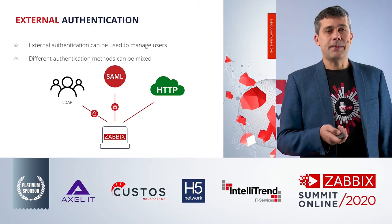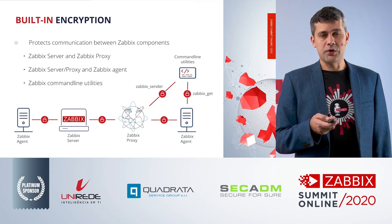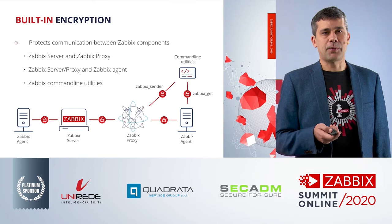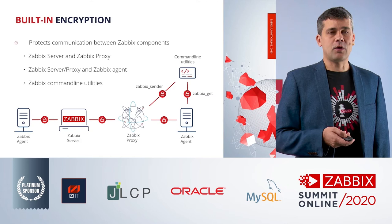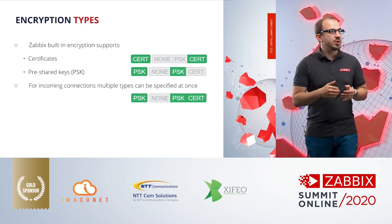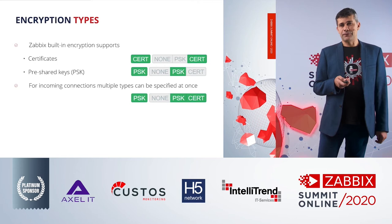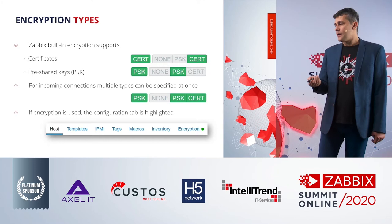Next, let's talk about internal communications. The built-in encryption can protect different Zabbix components — connections between the Zabbix server, proxies, agents, and command line utilities. There are two types of encryption: certificates and pre-shared keys (PSK). In Zabbix, you can specify both for incoming connections. One minor improvement in 5.2 is that when encryption is used, the encryption tab is highlighted, making configuration more transparent.